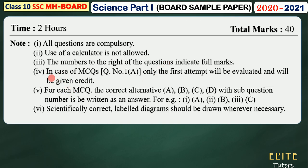The fourth point is that in the case of MCQs — multiple choice questions — which come in question number 1a, only the first attempt will be evaluated and given credit. The first answer you write will be credited with the marks. If you have written any answer in a second attempt, you will not get those marks. So think carefully and write your answer.